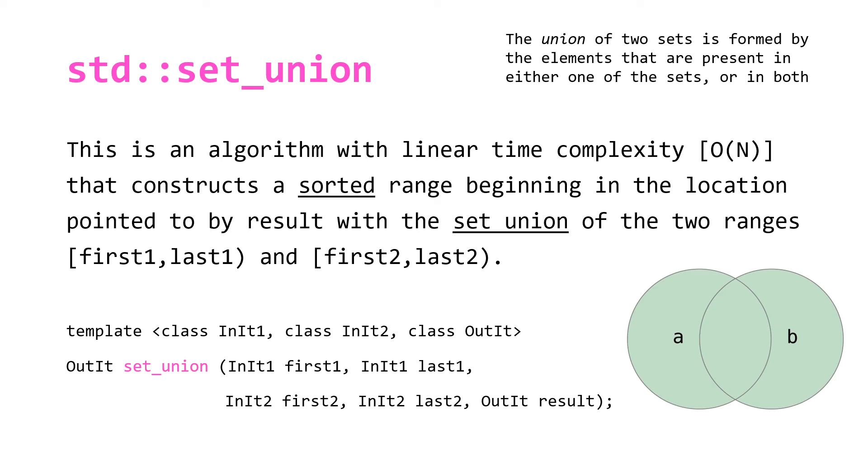Visually using Venn diagrams, that looks as follows: we have sets a and b, and we're going to construct a range that consists of all of the elements whether they're just in a, just in b, or in both.